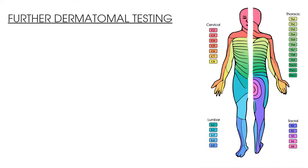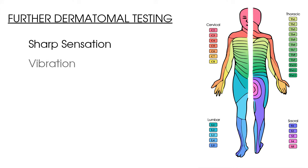And that completes our dermatomal testing of the upper limb and around the head and neck area. The particular dermatome that didn't feel the same was the C7 dermatome — our patient felt 50% sensation on the right in comparison to 100% on the left. It is standard to use cotton wool as your instrument for testing light touch. However, the next step may be to further explore the area of diminished sensation by testing sharp sensation, vibration sensation, or hot and cold sensation.